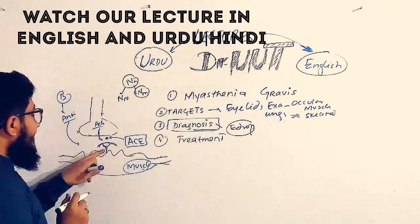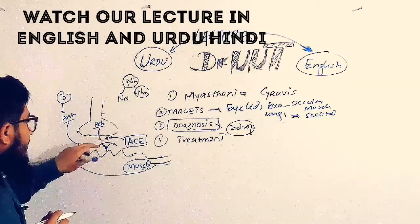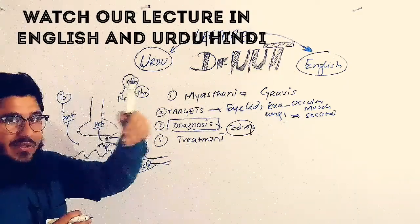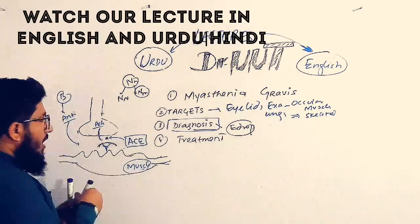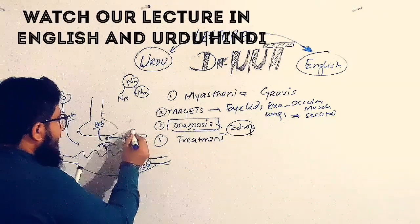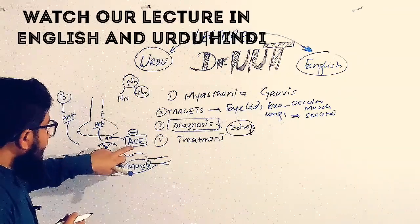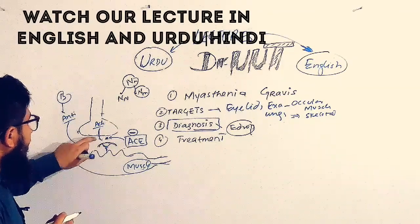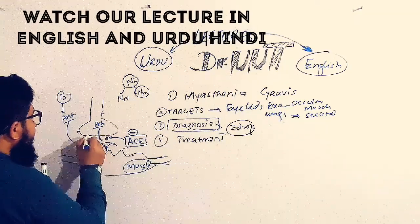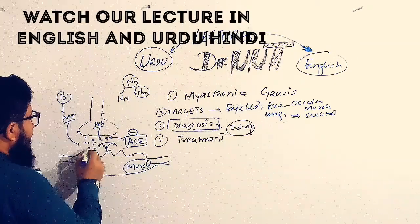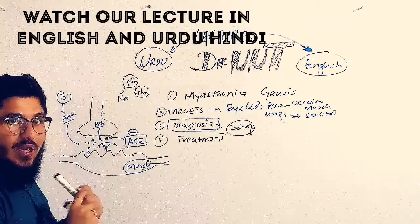One problem is that the receptor is covered; the other is that the concentration of acetylcholine is not enough to find another receptor and activate it. When edrophonium is injected, it inhibits the acetylcholinesterase enzyme. Inhibition of acetylcholinesterase leads to accumulation of acetylcholine — it is no longer broken down. When the concentration of acetylcholine increases, it will find receptors on the muscle, activate them, and muscle contraction will happen.